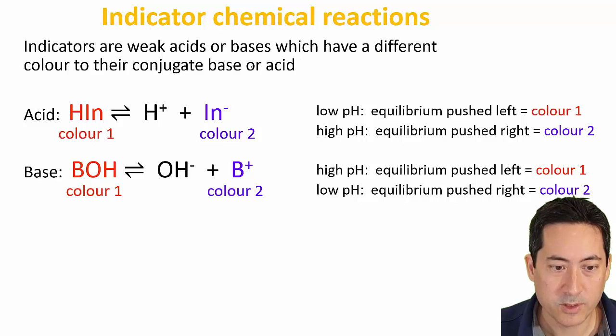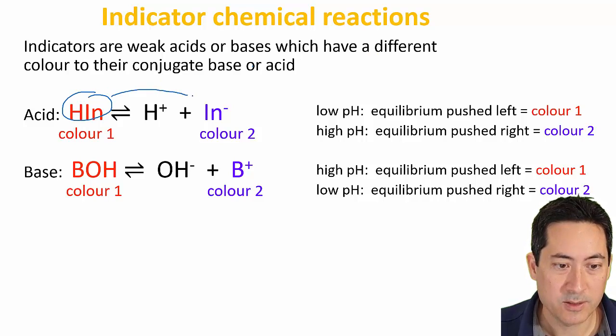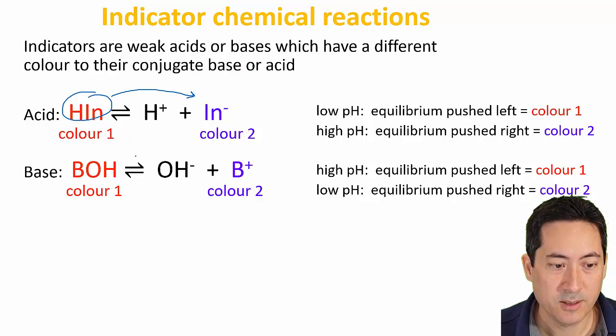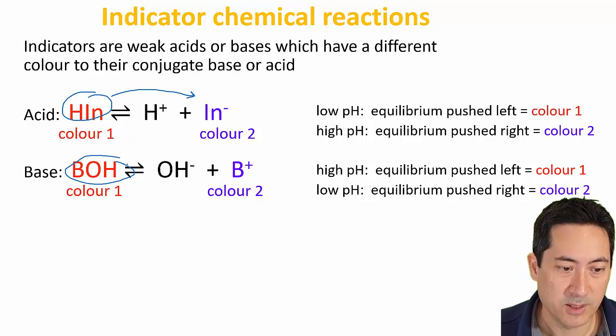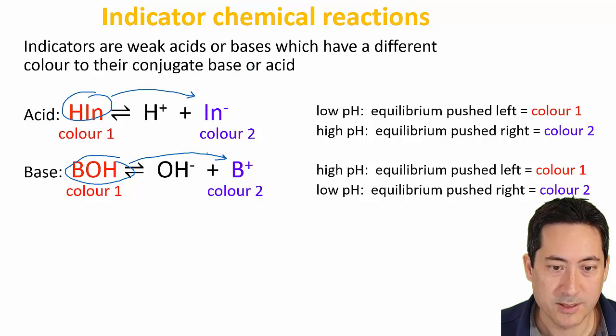Acid-base indicators work because in the acid form it is one color, then it goes to the conjugate base and it's a different color. Or if it's a base, it's one color and moves to the conjugate acid, it's a different color.